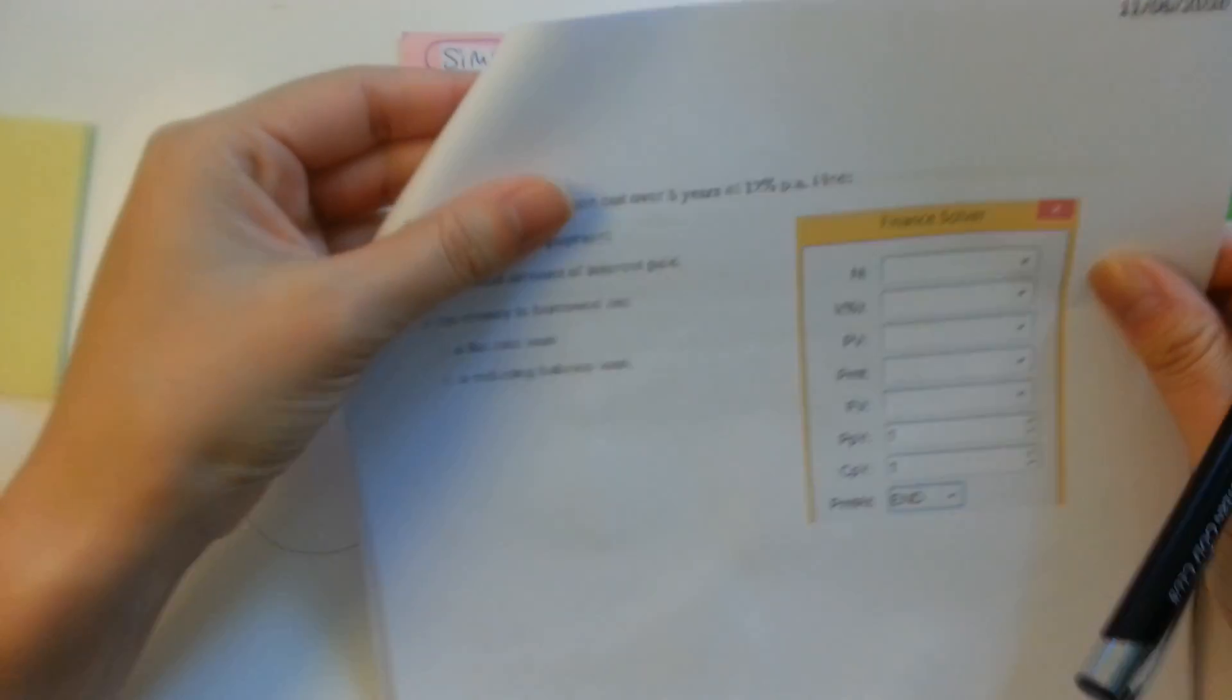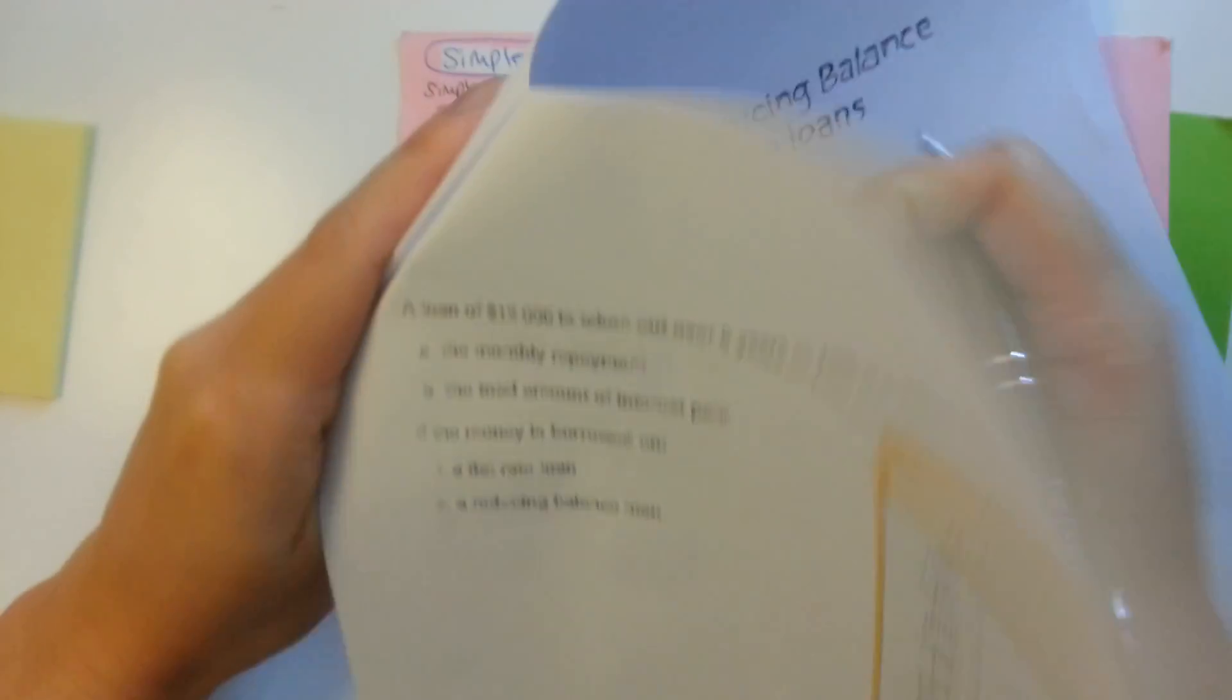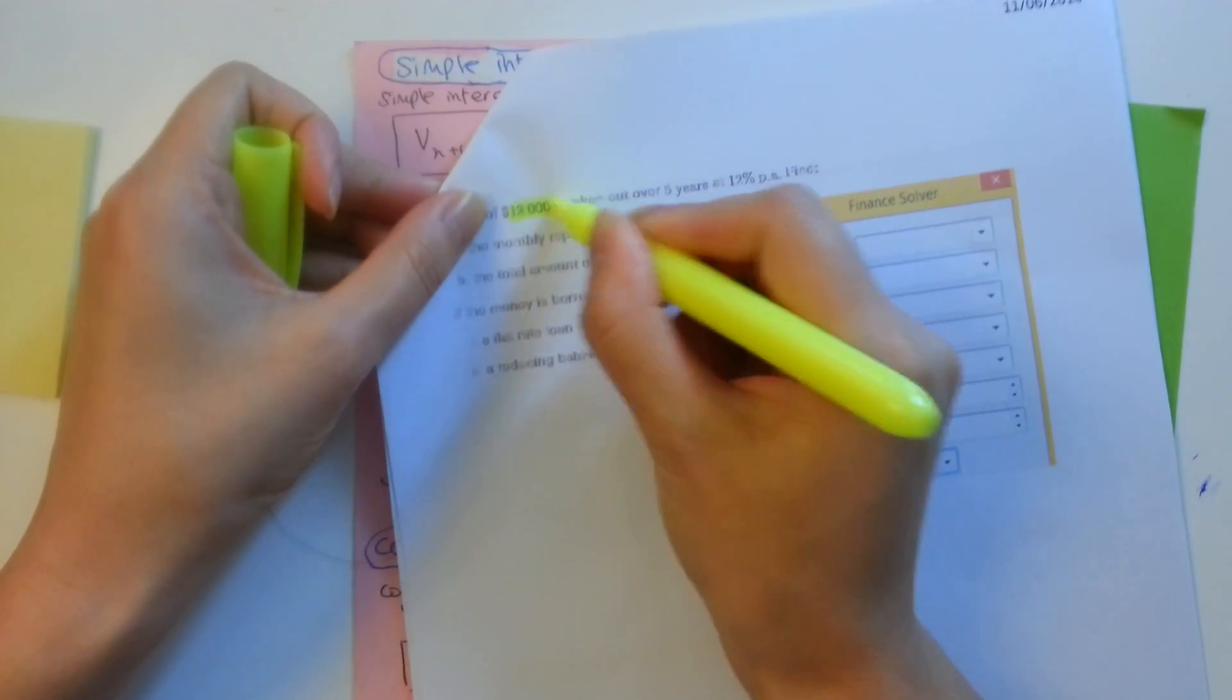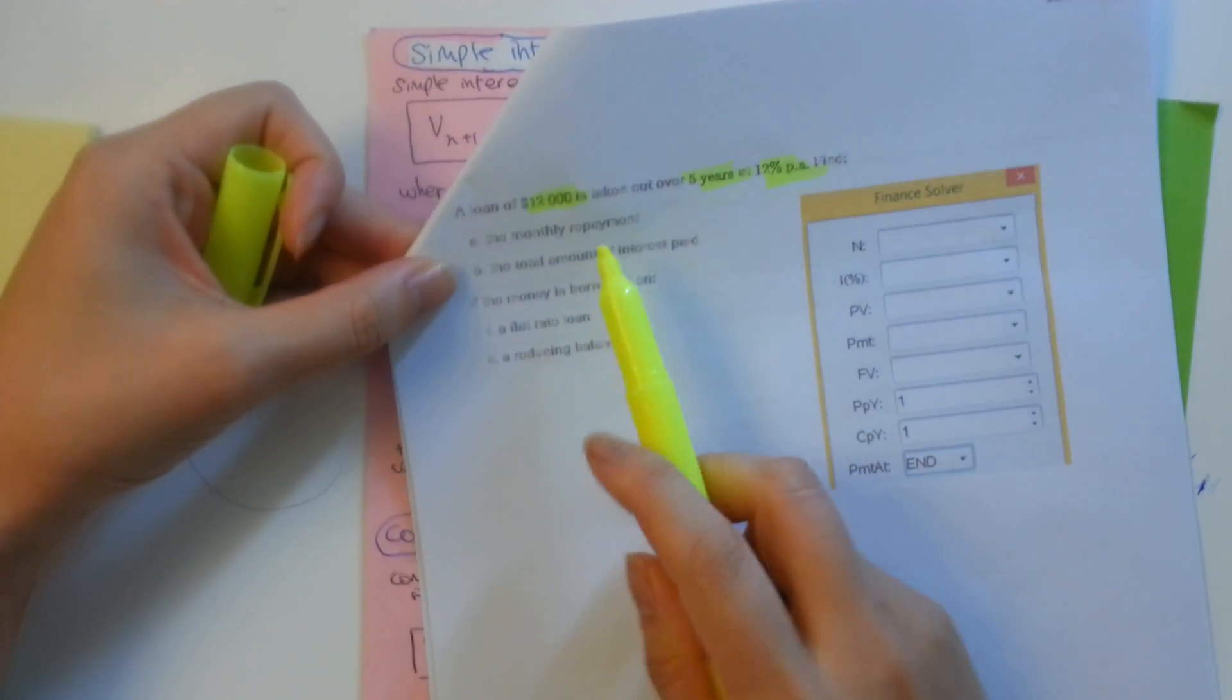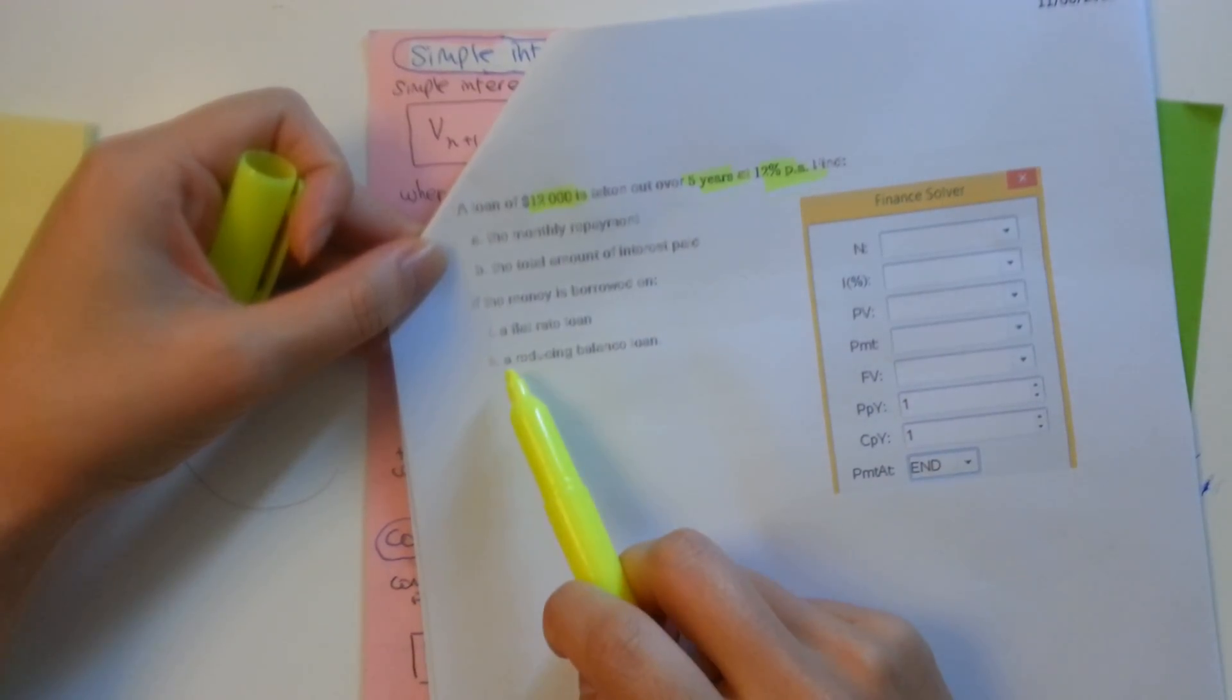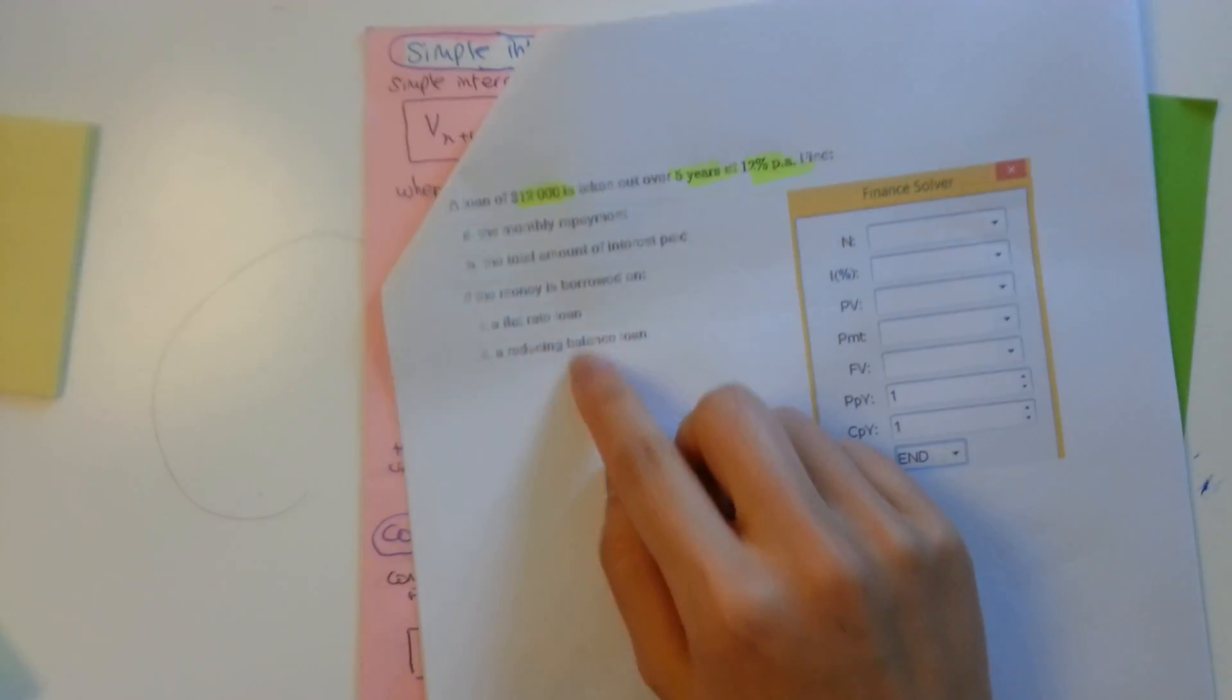So this will be on page two. Now my printer is printing funny, so it's a little bit blurry here. But hopefully you can still see what I'm trying to do. So it says here a loan of $12,000 is to be taken out over five years at 12% per annum. We're going to find the monthly repayment and the total amount of interest paid if the money is borrowed on flat rate and if the money is borrowed on a reducing balance loan. So to do that, we're actually doing a comparison between the two.